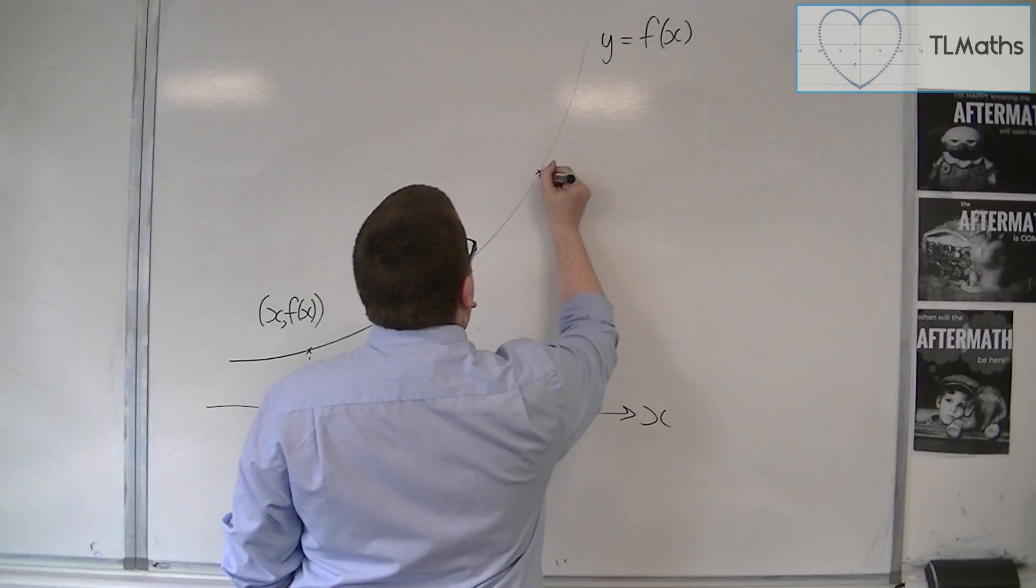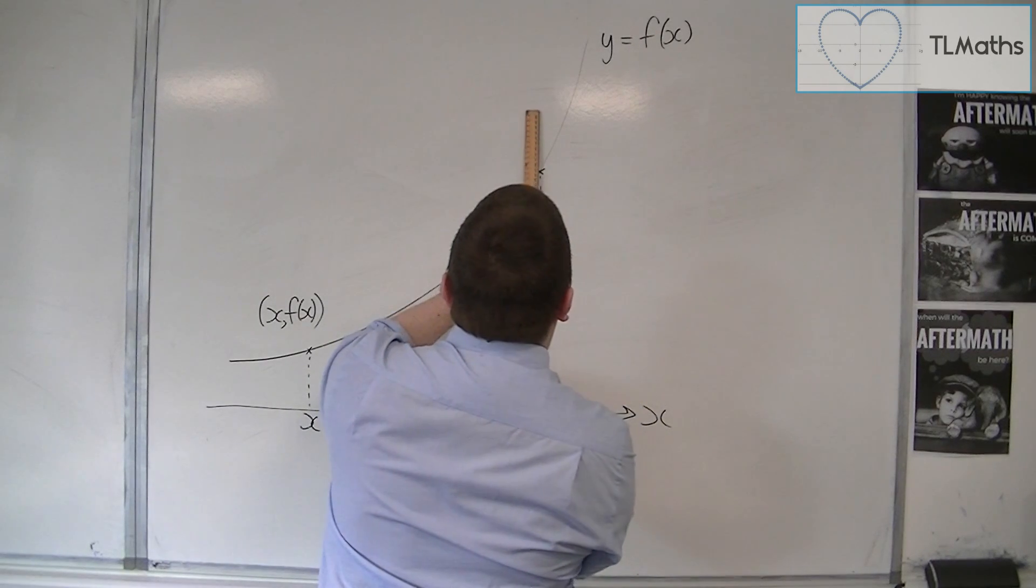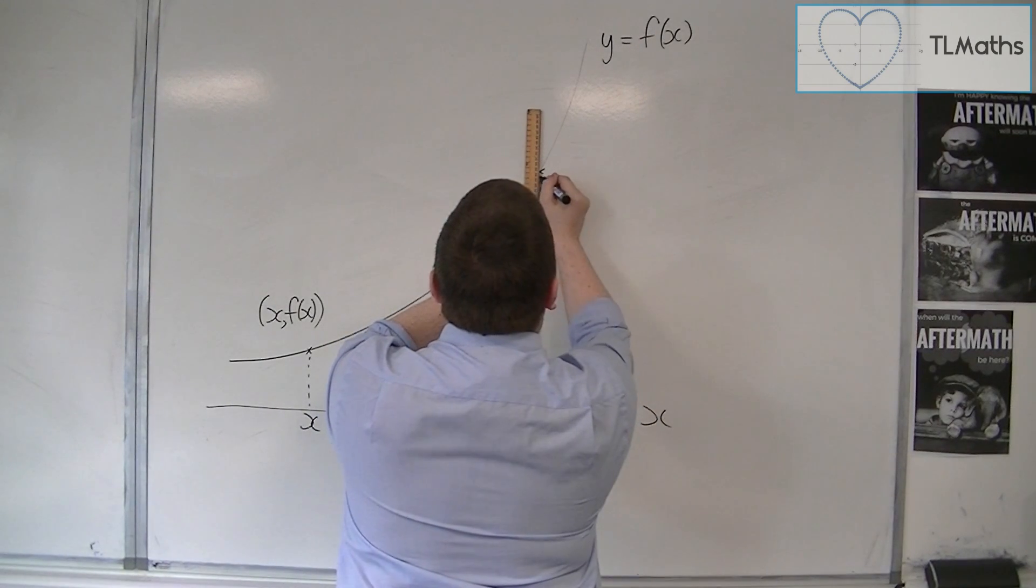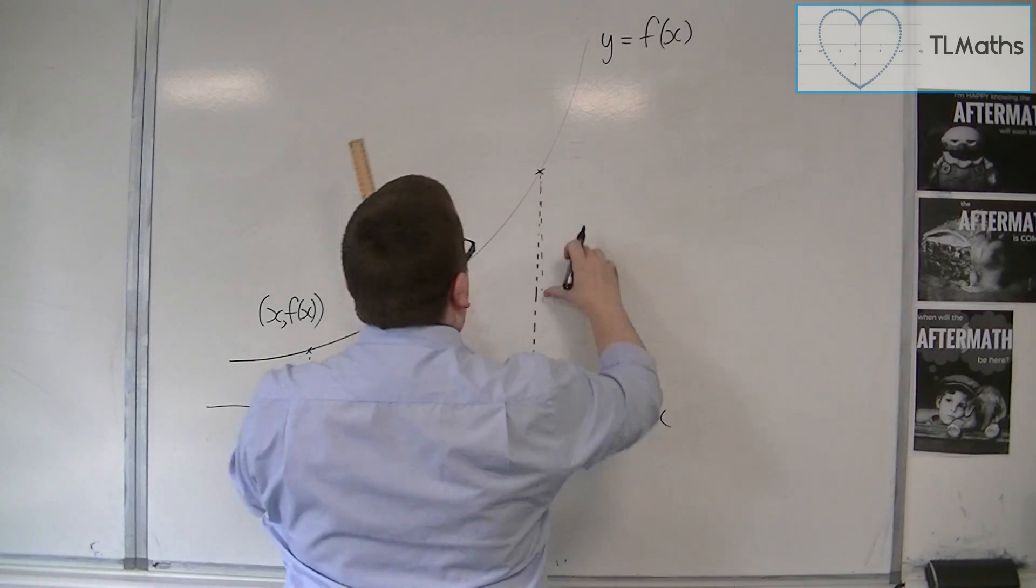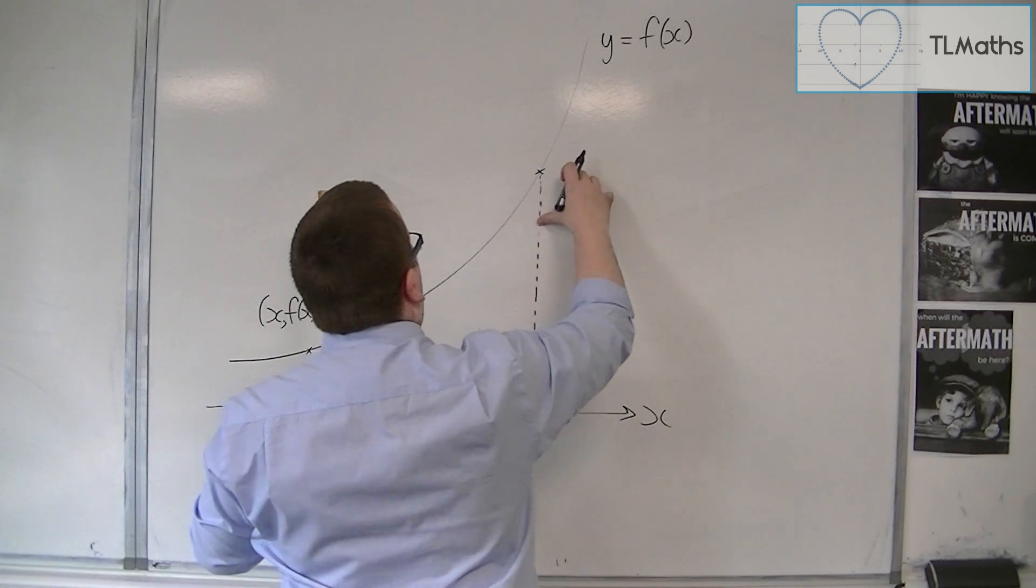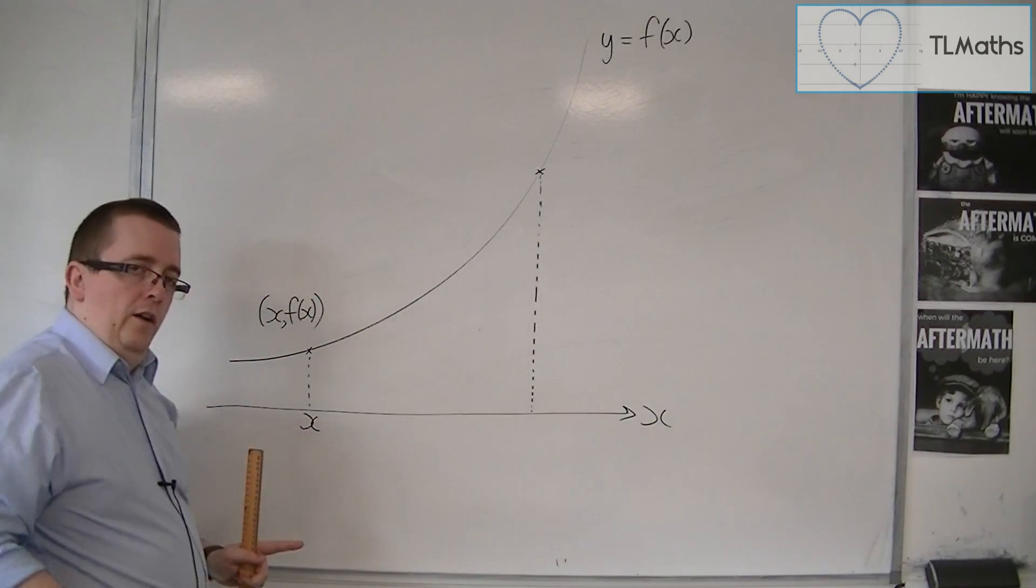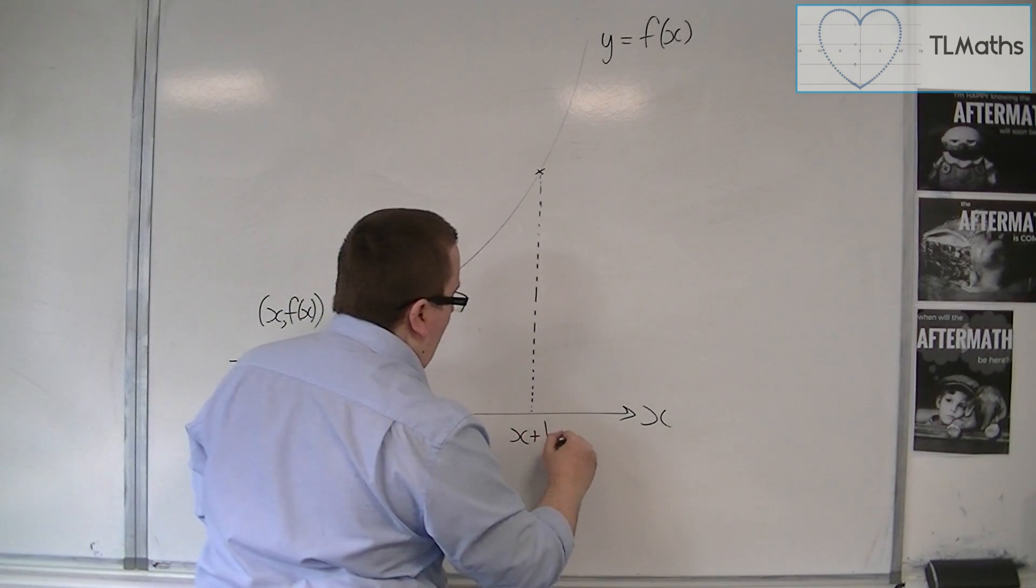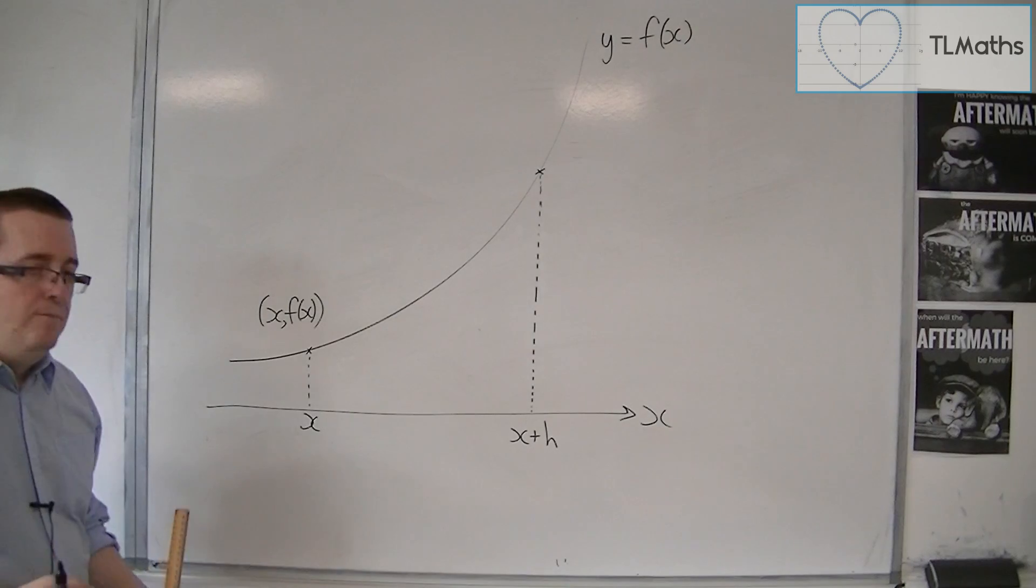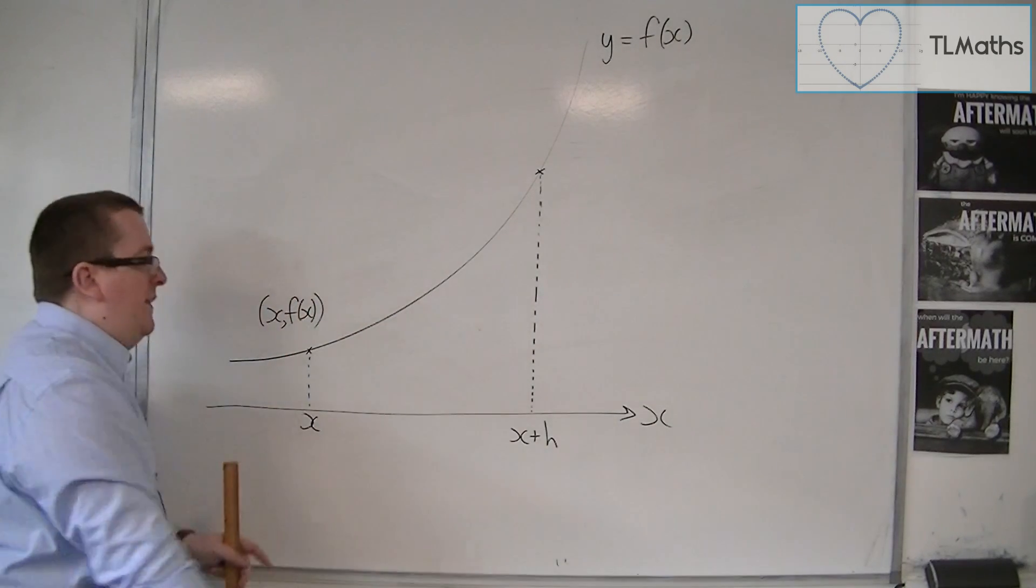So here is another point. I'm just trying to make sure that I drop this line vertically, otherwise it's not going to look any good. So let's say that this point is a little bit along the x-axis. So let's say that it is a little bit along, let's put it at x plus h. So at x, and add a little bit of h. And that gets you there.